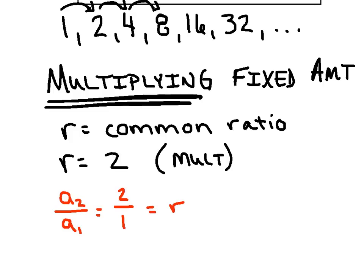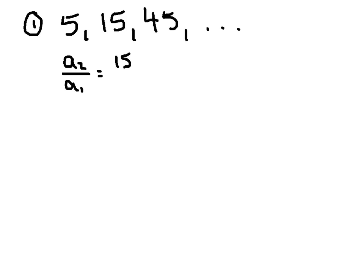In the next three examples, I want you to verify that it's a geometric sequence and identify the common ratio. Let's start with 5, 15, 45. Although there's only three terms, you can quickly identify that yes, we are multiplying by the same fixed amount each time. Take the second term and divide it by the first term, and there's your R value. We could say R equals 3.